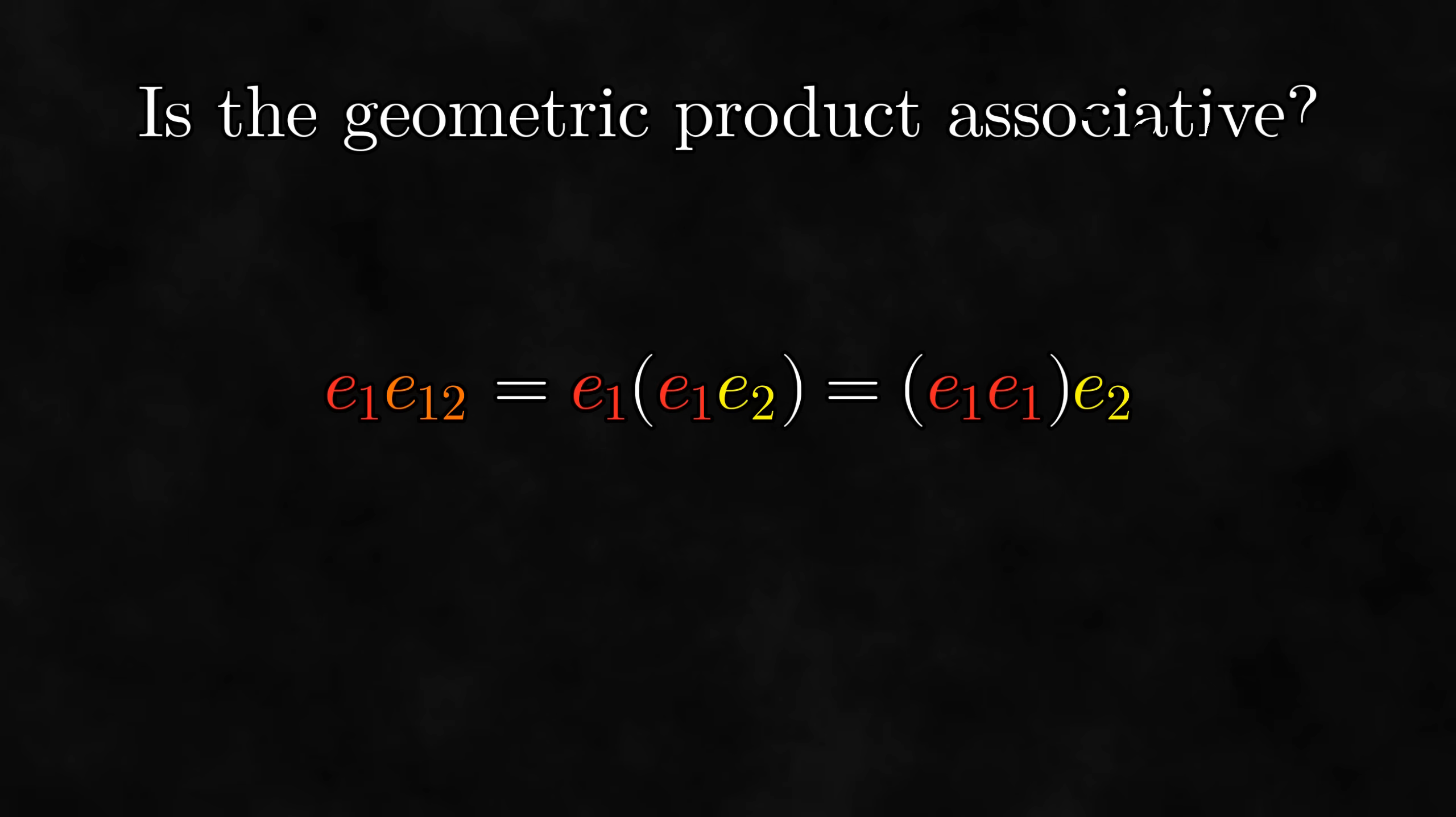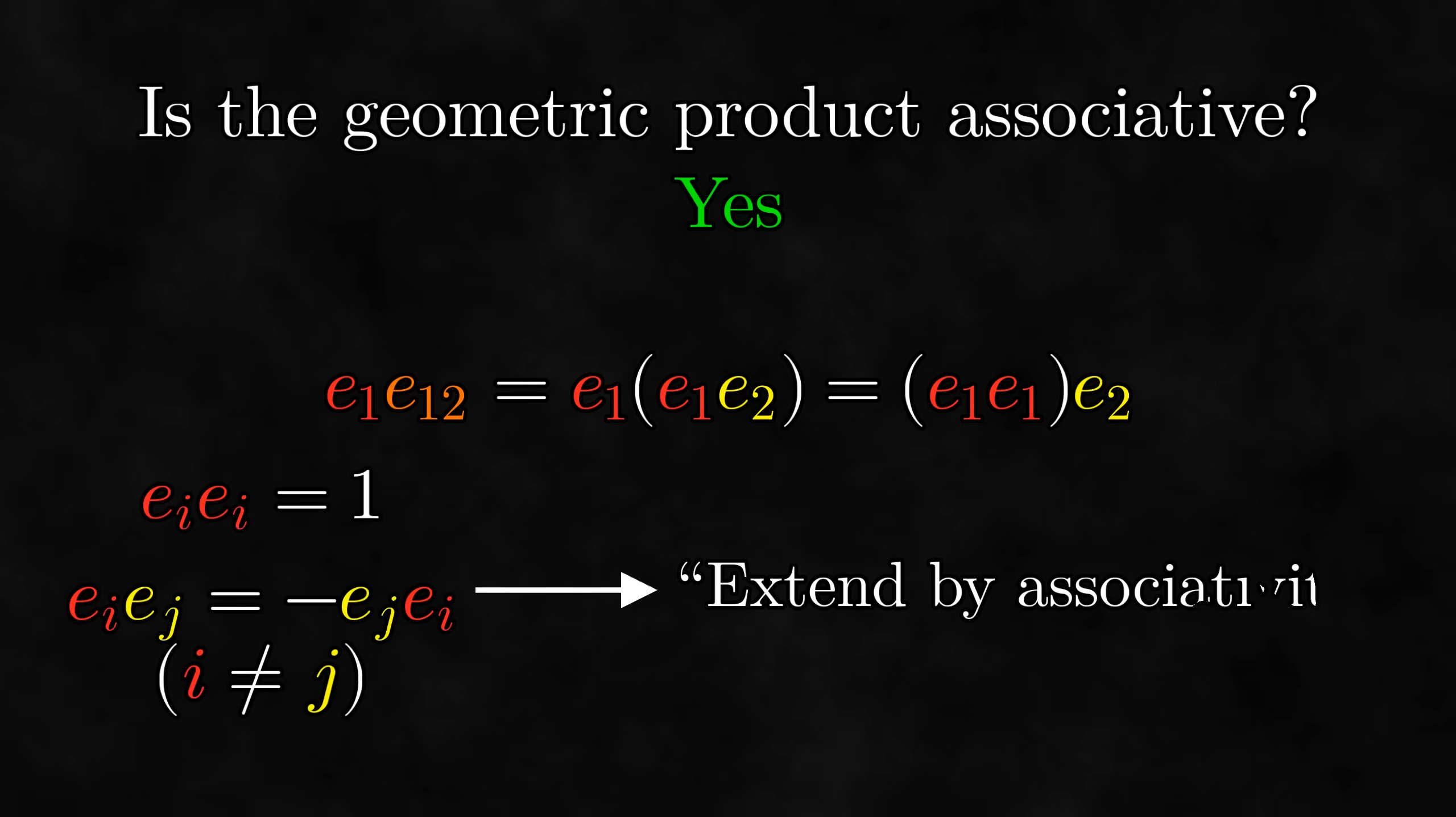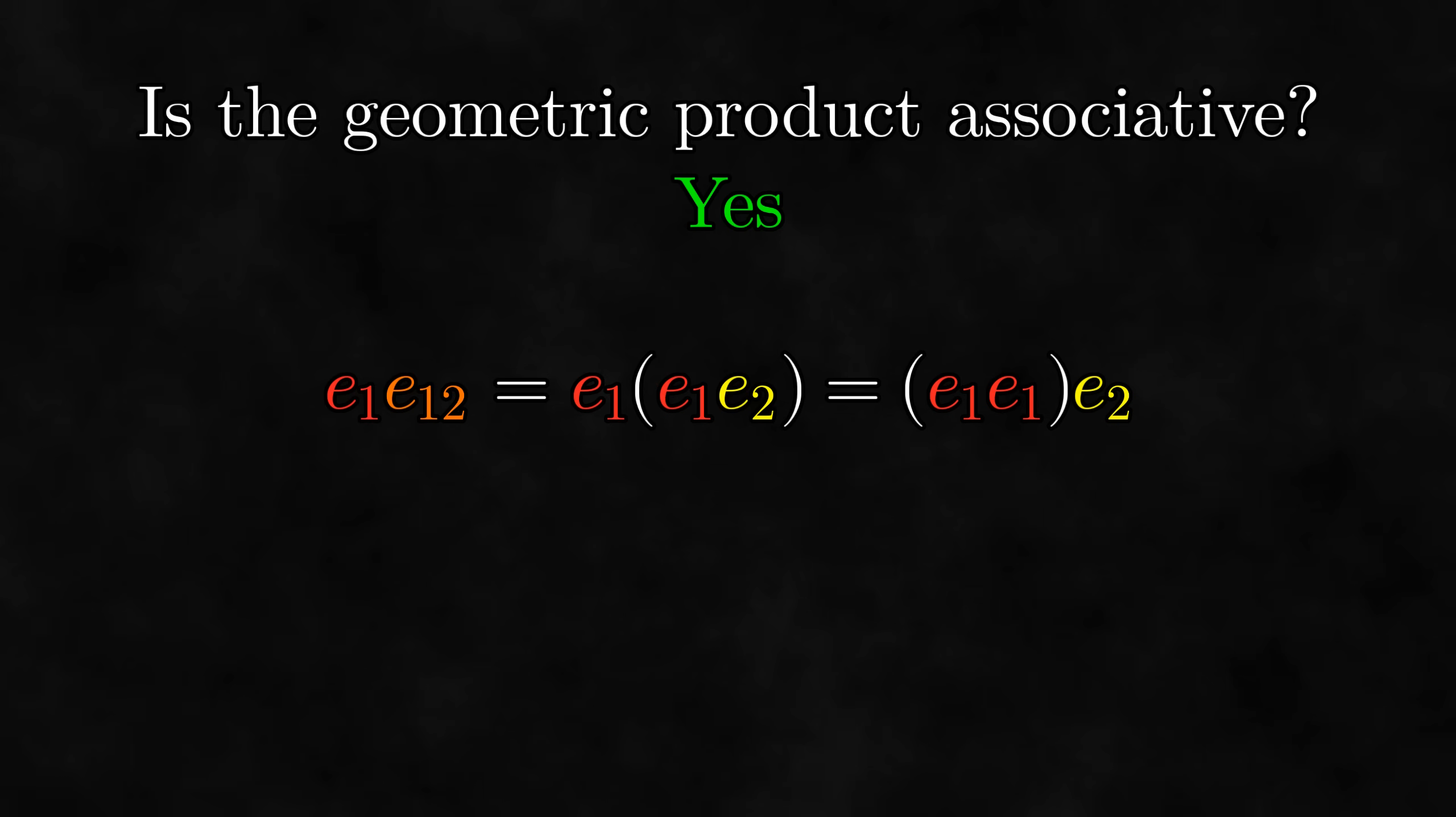Now there might be something nagging at you in these calculations. When calculating e1 e12, we should technically have parentheses around e1 e2 when expanding. Then, to get to squaring e1, we would have to know that the geometric product is associative. So is the geometric product associative? The answer to this question is yes, the geometric product is associative. In a sense, we have defined the geometric product on all multivectors by taking the product on vectors and extending by associativity. This argument is very non-rigorous, but rigorous proofs that the geometric product is associative are quite advanced, so we won't talk about them until chapter 7. The important point is that the geometric product is associative, so these kinds of manipulations are valid.